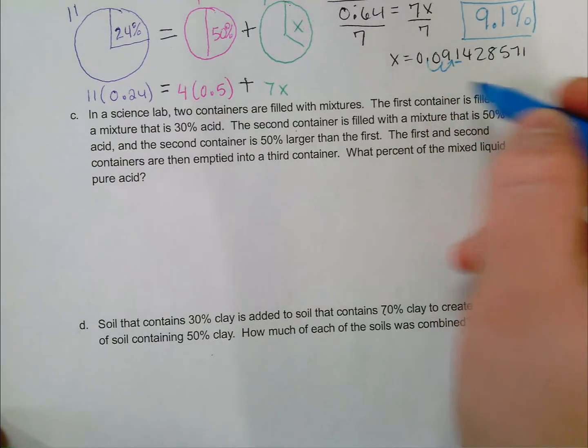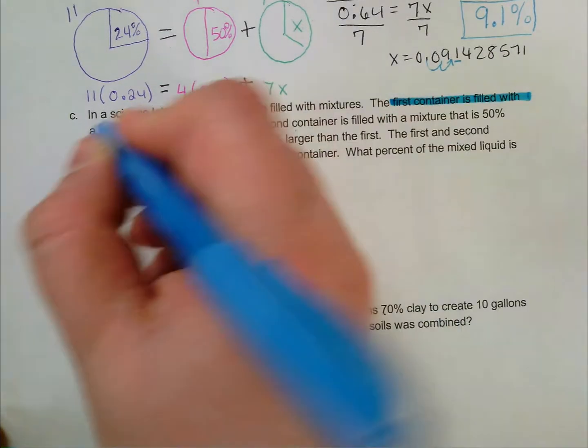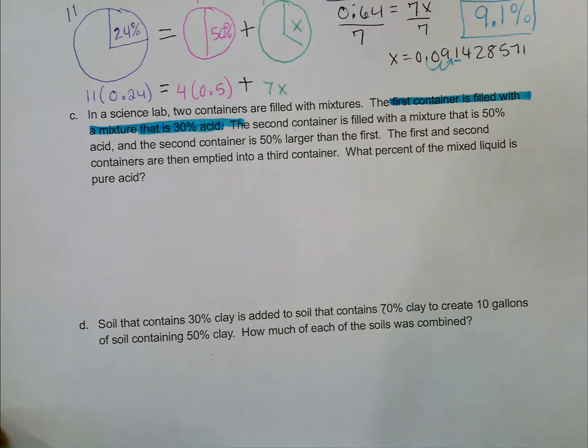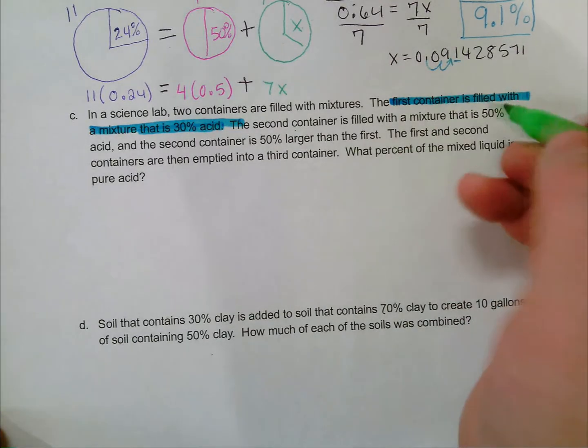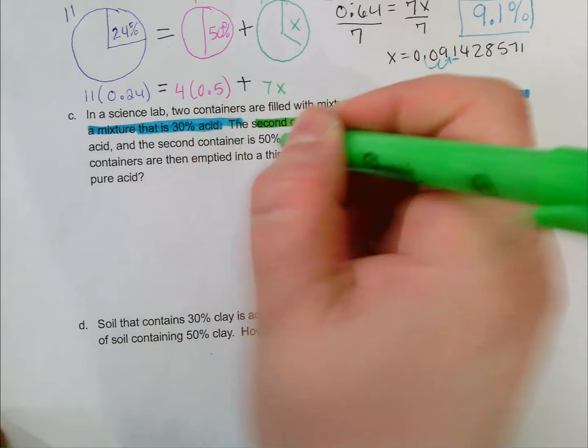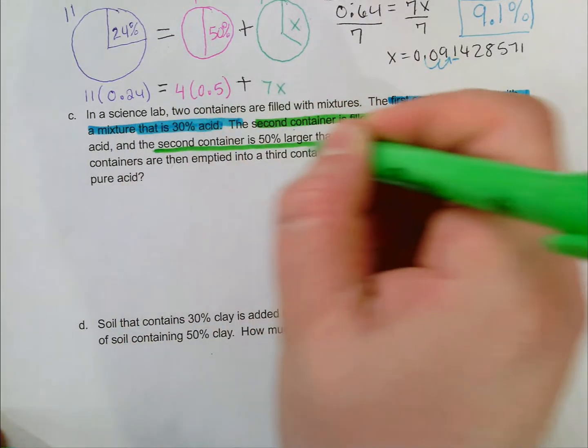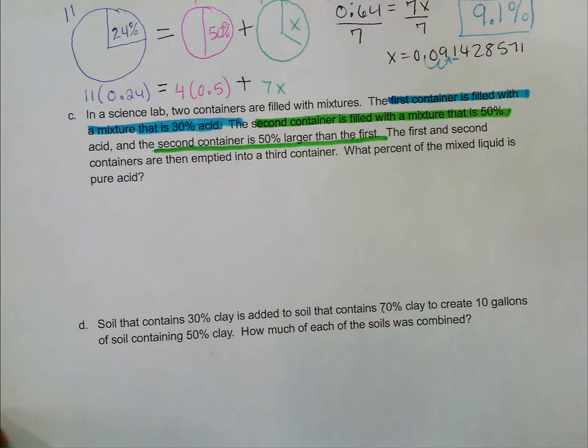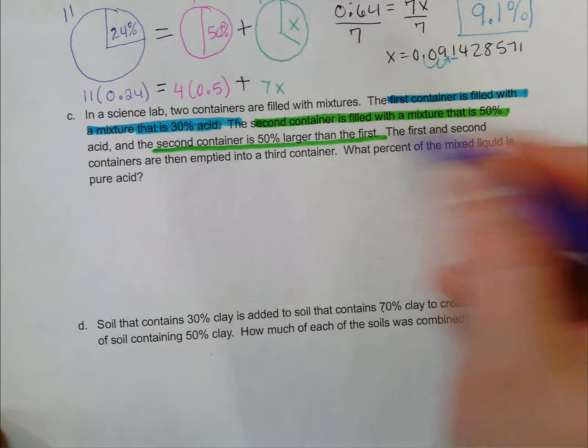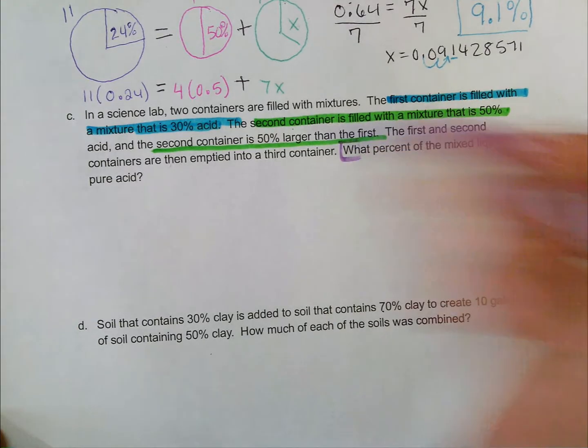I know that the first container is 30% acid. The second container is 50% acid, and I know it's also 50% larger than that first container. I don't know how big the containers are. That's okay. When I take the third container, I want to figure out what percent is pure acid.